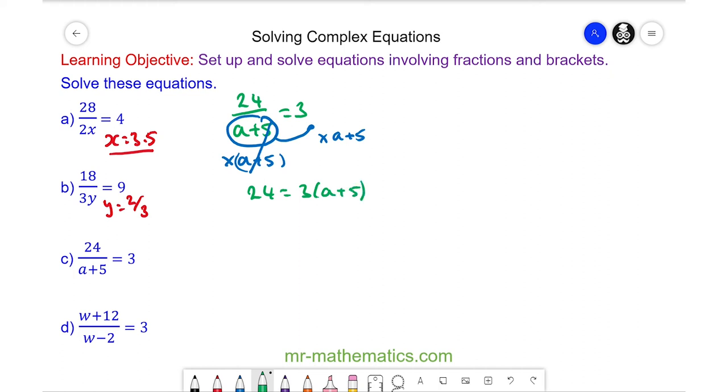Now we could expand the brackets out, but we could also divide both sides by 3 because 3 is a factor of 24. So we don't need to expand the brackets out. The 3s will cancel. So we have 8 is equal to a plus 5.